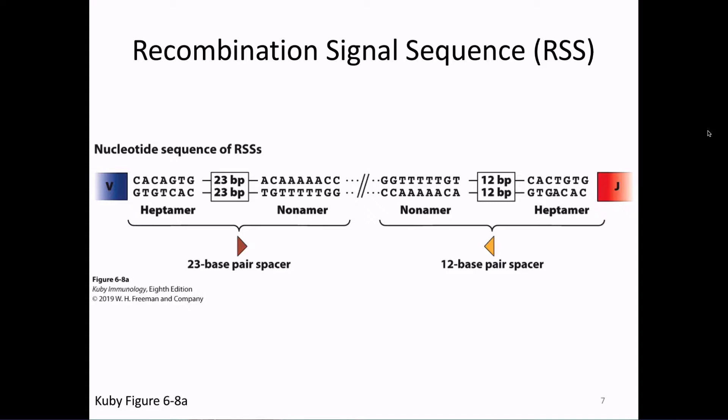Whenever we draw one of these RSS triangles, that's what is being encompassed — they're drawn as two different colors indicating one has a 23 base pair spacer and one has a 12 base pair spacer. Knowing the difference between the 23 and the 12 and knowing where they are is quite important. It turns out that 12 base pairs is one turn around the DNA helix, and 23 is two turns. So the heptamer and nonamer are separated by one or two turns of the helix. These are sometimes called two-turn and one-turn spacers.